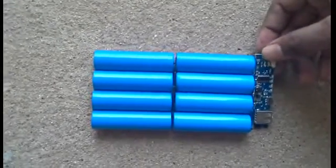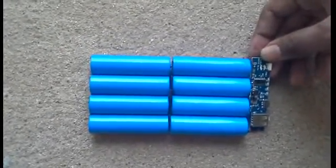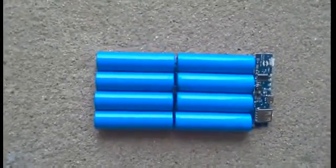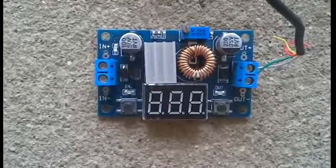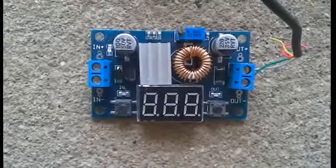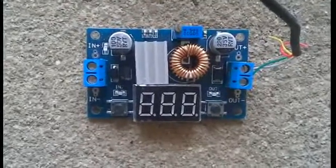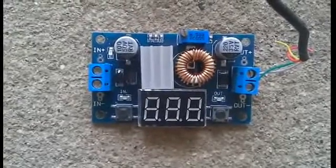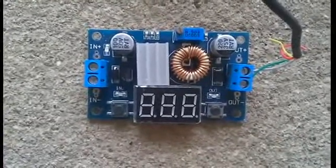So today I am going to change the circuit. The circuit which you are seeing here is a buck converter. Actually it is a step-down voltage regulator. The maximum power it can handle is 75 watts. After that you have to replace the heat sink which is on this circuit.